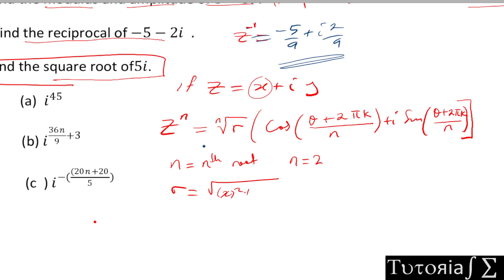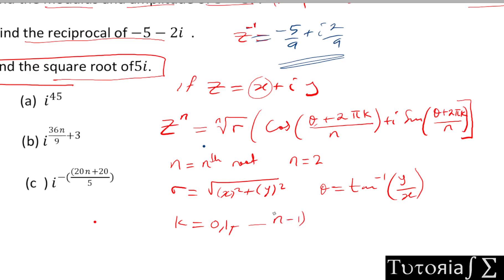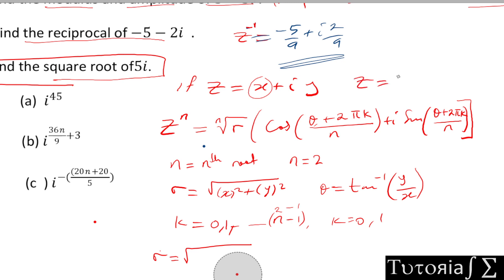Applying this to finding the square root of z = 5i: here the real part is 0 and the imaginary part is 5. So r = √(0² + 5²) = √25 = 5. Note that r is always positive — it will never be negative.